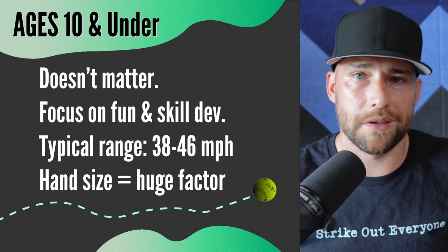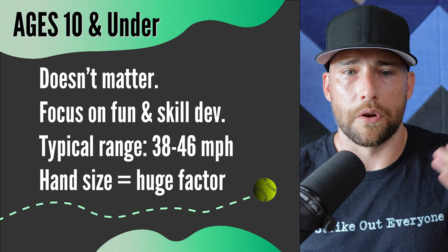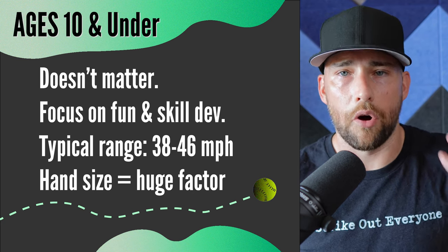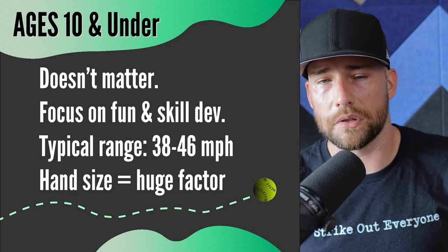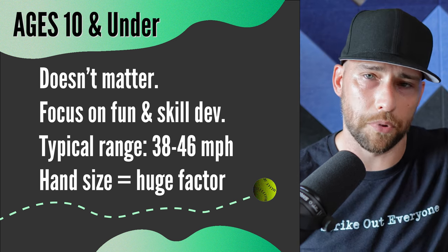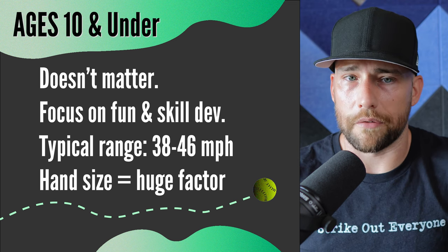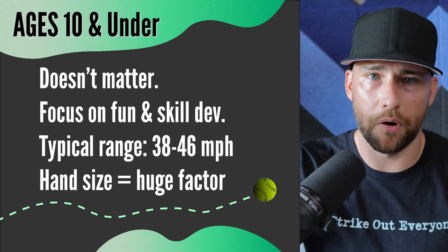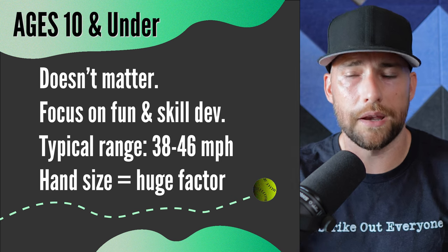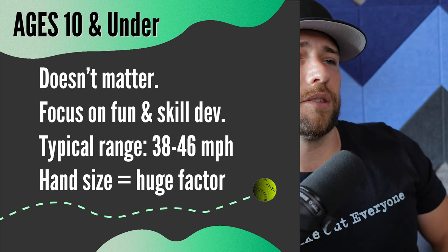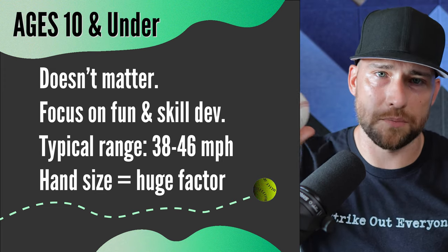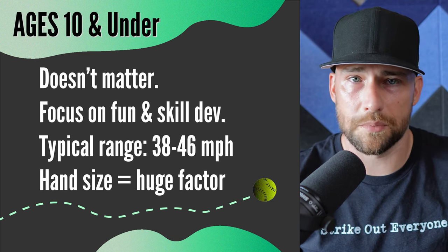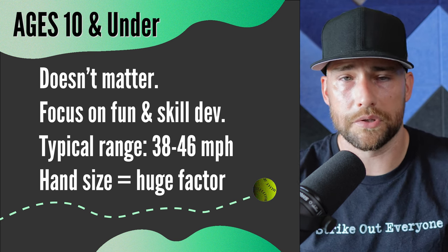For 10 and under, it really does not matter. Most 10-year-olds are going to be really small — they're focusing on loving the game, learning the fundamentals, getting their footwork down, and learning good throwing technique. For softball especially, hand size is a huge factor. For a nine-year-old girl with really small hands, it's the equivalent of me throwing a volleyball — it's really hard and negatively impacts your mechanics. This is why I suggest all players learn on a baseball when they're young. Don't shy away from teaching your daughter to throw a baseball or a tennis ball — it's really developmentally valuable.